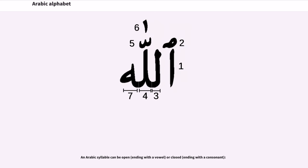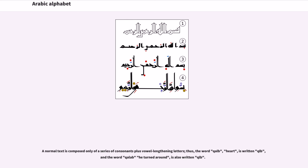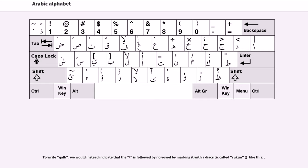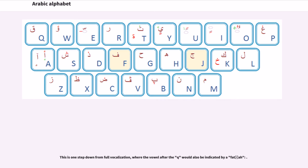An Arabic syllable can be open, ending with a vowel, or closed, ending with a consonant. A normal text is composed only of a series of consonants plus vowel-lengthening letters; thus the word 'qalb' (heart) is written 'qlb', and the word 'qalab' (he turned around) is also written 'qlb'. To write 'qalab' without this ambiguity, we could indicate that the lam is followed by a short 'a' by writing a fatha above it. To write 'qalb', we would instead indicate that the lam is followed by no vowel by marking it with a diacritic called sukun. This is one step down from full vocalization, where the vowel after the qaf would also be indicated by a fatha.